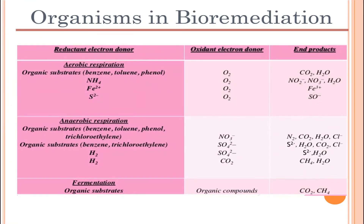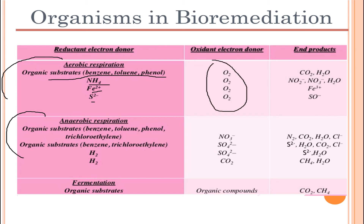Looking at organisms in bioremediation with aerobic and anaerobic respiration examples: in aerobic respiration, organic substrates can include benzene, toluene, and phenol, as well as ammonia, iron, sulfate, and sulfur. Oxygen acts as the electron acceptor. The end products are mainly CO2 and water, and in some cases nitrate, nitrite, iron, and sulfate.